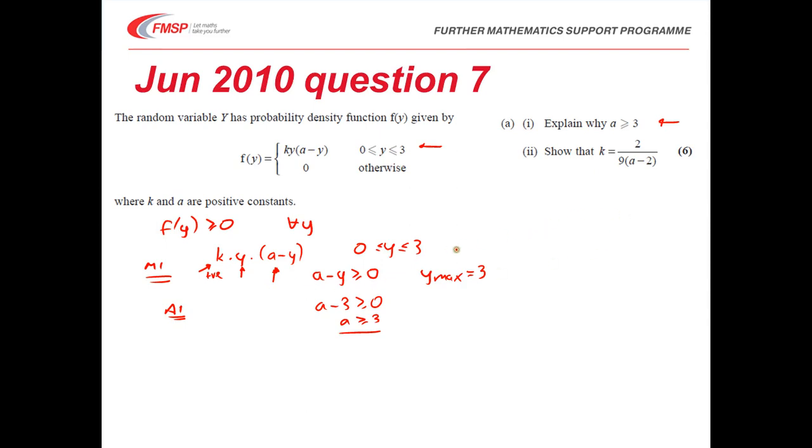For part 2, we've got to show that k equals 2 over 9a minus 2. To do this, we need to realize that we're integrating over all values of y, f of y, and that must give me 1. In this particular case, we've only got one support, 0 to 3.